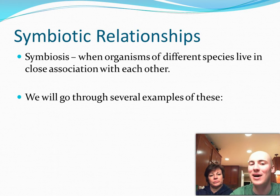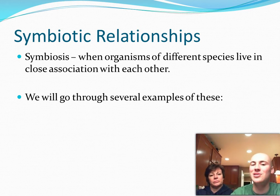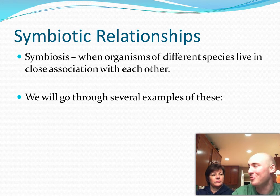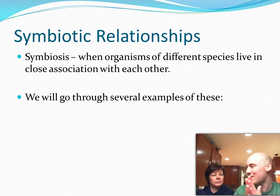The ones we're about to talk about all fall under this category called symbiosis. Symbiosis is sort of an umbrella, and we're going to talk about three examples. Symbiosis is when organisms of two different species live in close association with each other — meaning they basically live with each other. It's not like a chance meeting of a wolf and a hare. Symbiosis means these organisms are right there all the time.